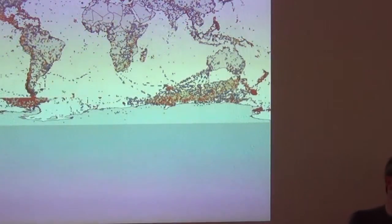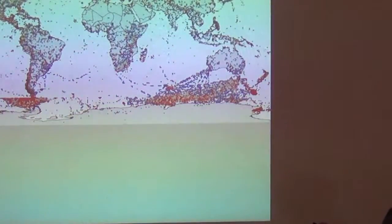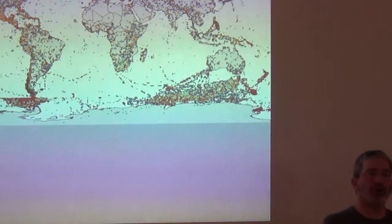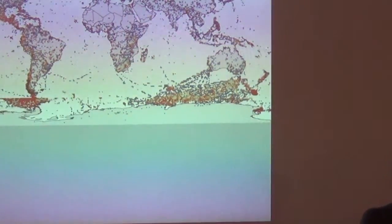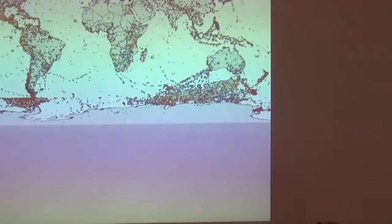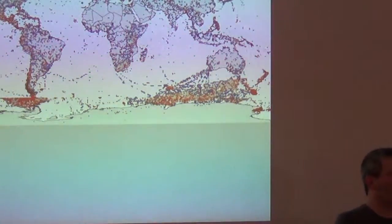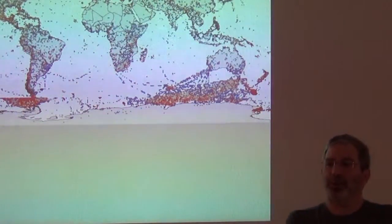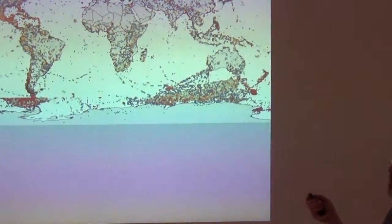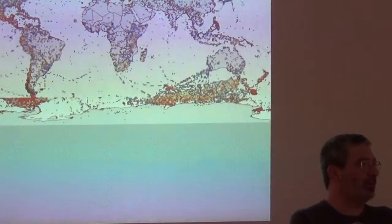This is a map at one-degree resolution of the world. Where you see blue, there's some information but the inventory of that 100 by 100 kilometer square is not at all complete. Where you see red, the inventory is at least in quantitative terms relatively complete. Where you see gray, there is no digital accessible knowledge.